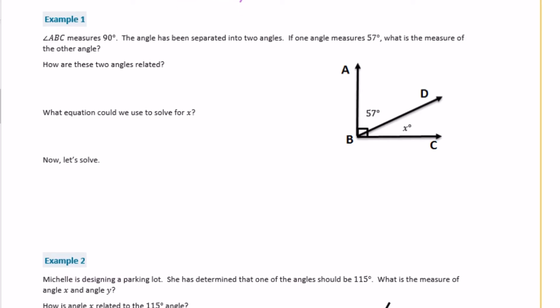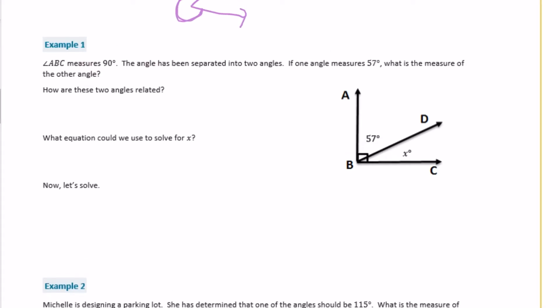Now we're going to apply those terms to some equations. Angle ABC measures 90 degrees. This angle has been separated into two angles. If one angle measures 57 degrees, what is the measure of the other angle? The first question asks: how are these two angles related? They're related because if we added them together they would add up to 90 degrees. So we can say the two angles have a sum of 90 degrees.